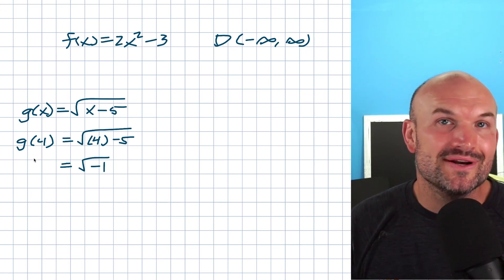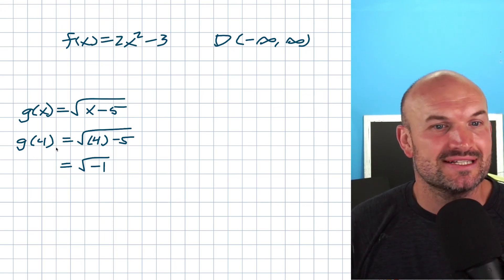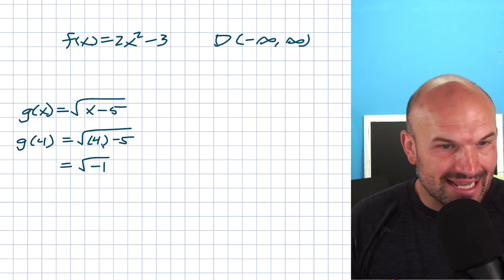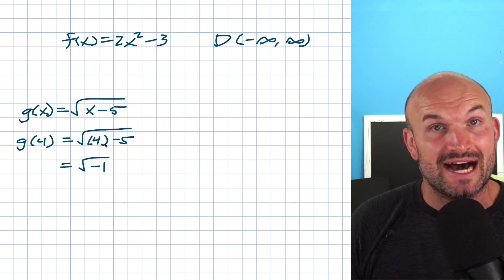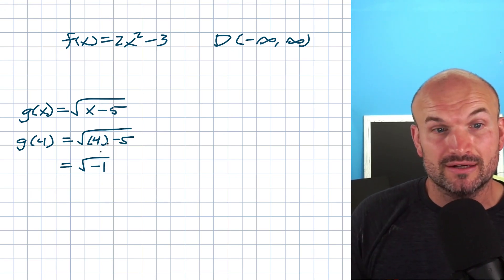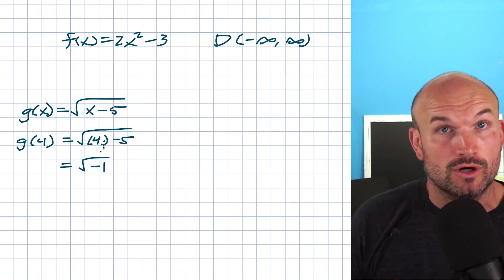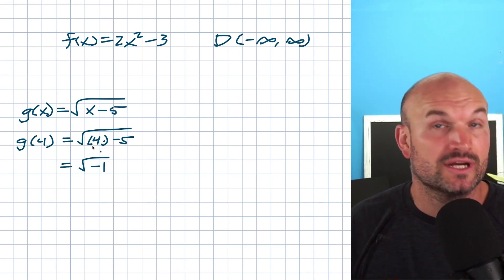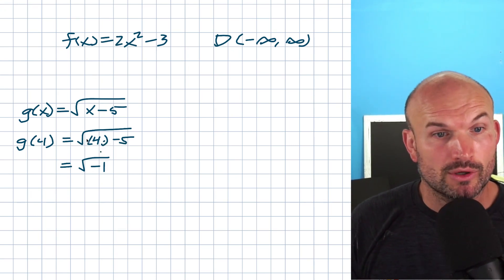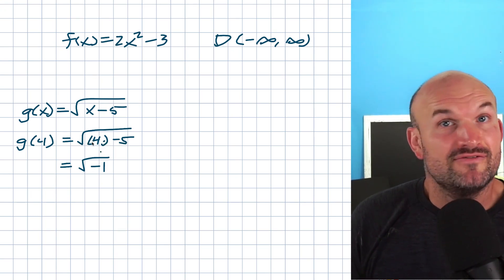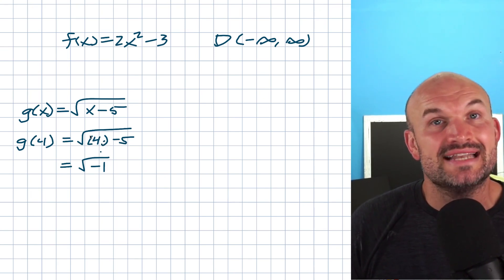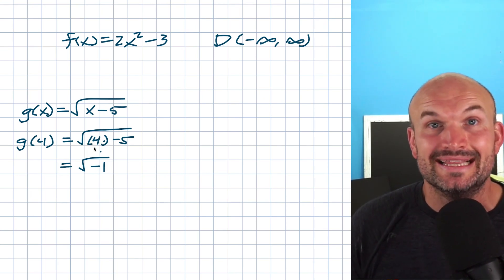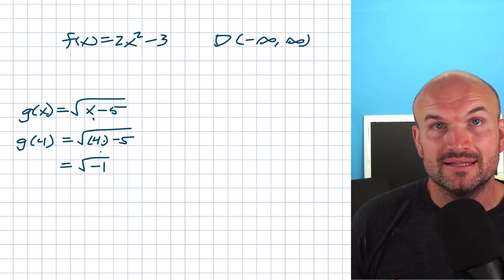And there are more numbers this function is not defined for. Really, any number smaller than 5 is not going to work here. 3 won't work, 2 won't work, 0 won't work, negative 5 won't work. Any number smaller than 5 is not going to be in this domain.